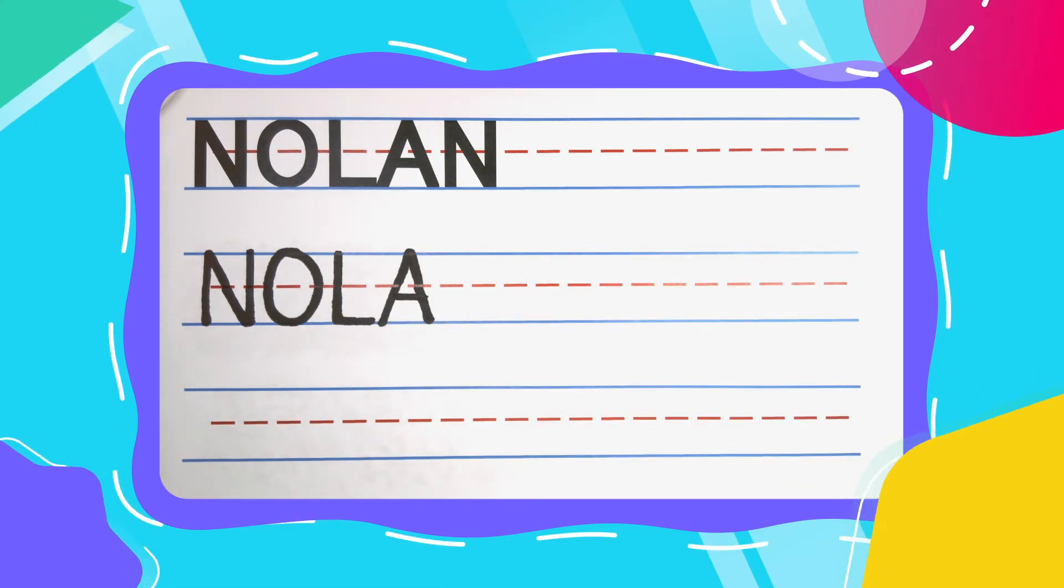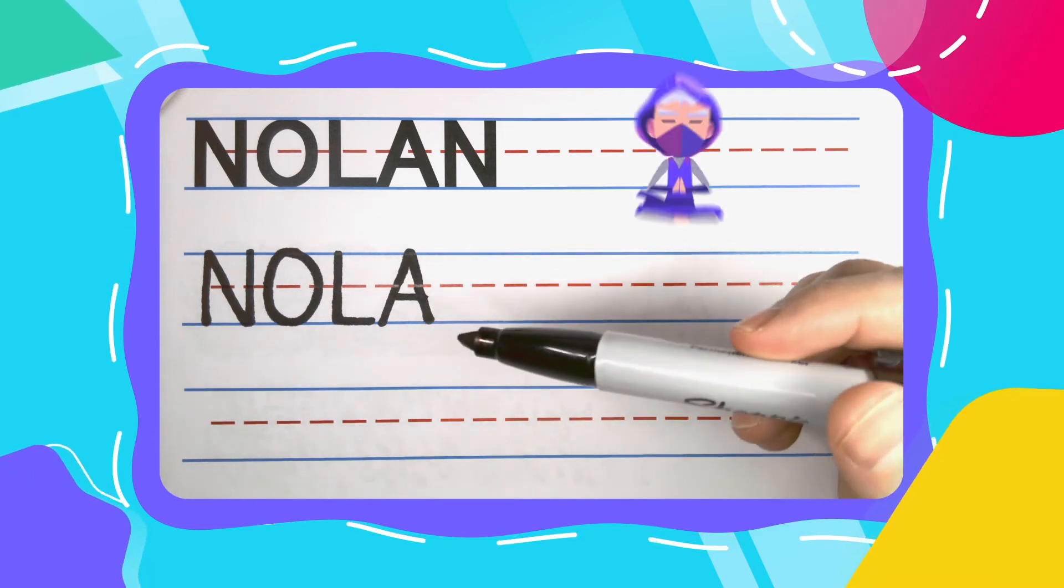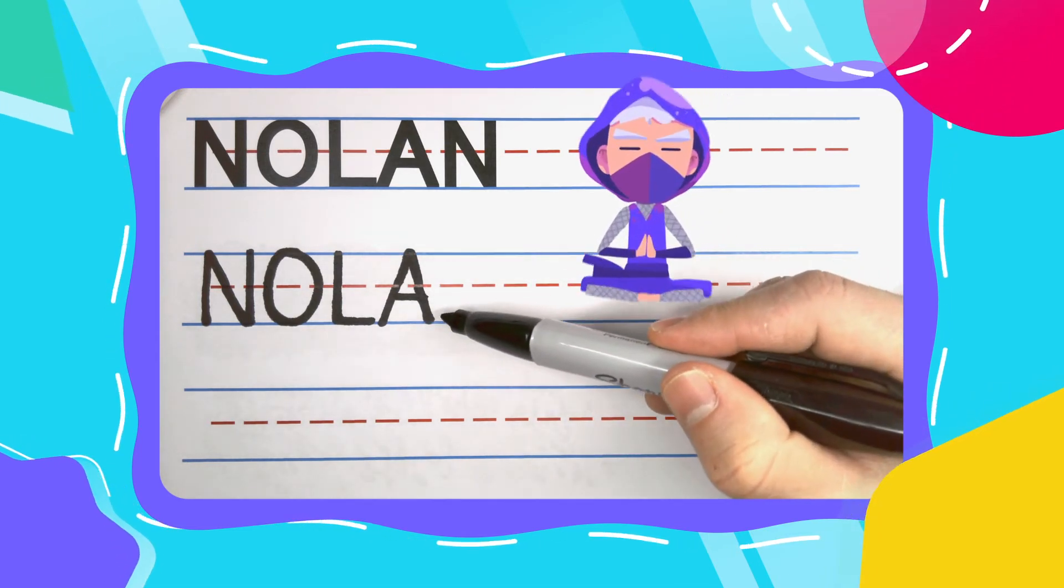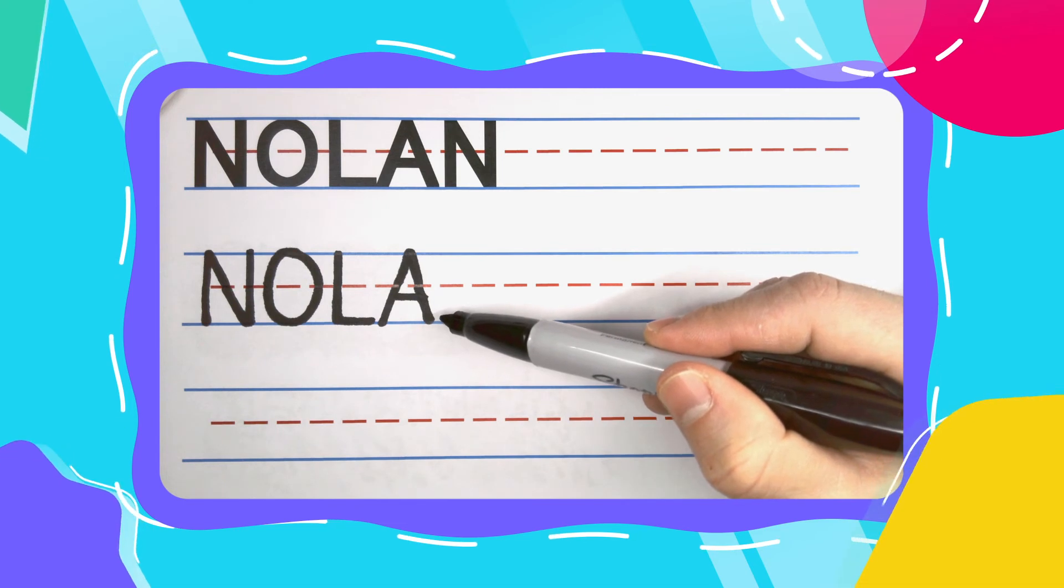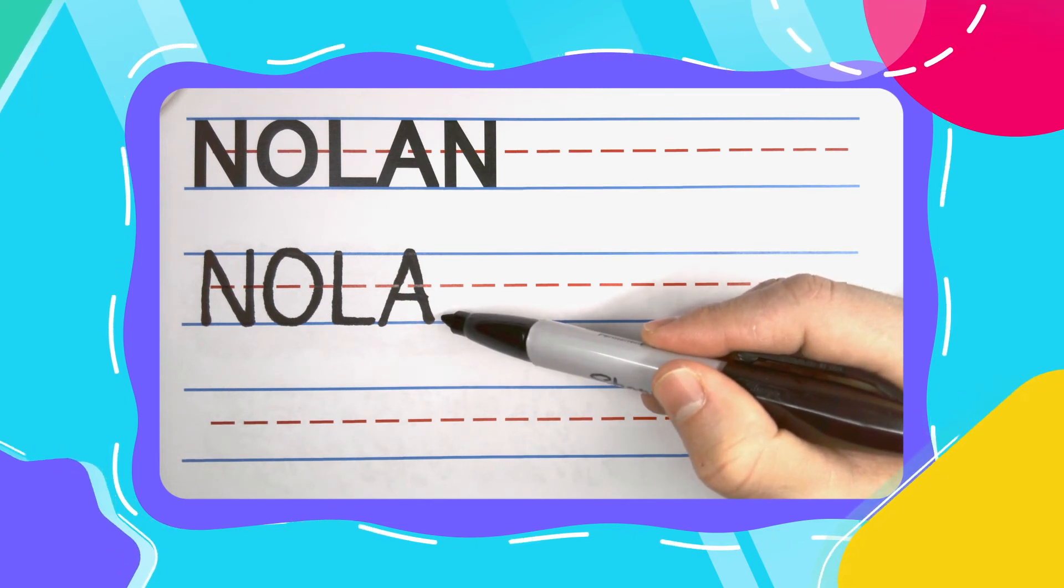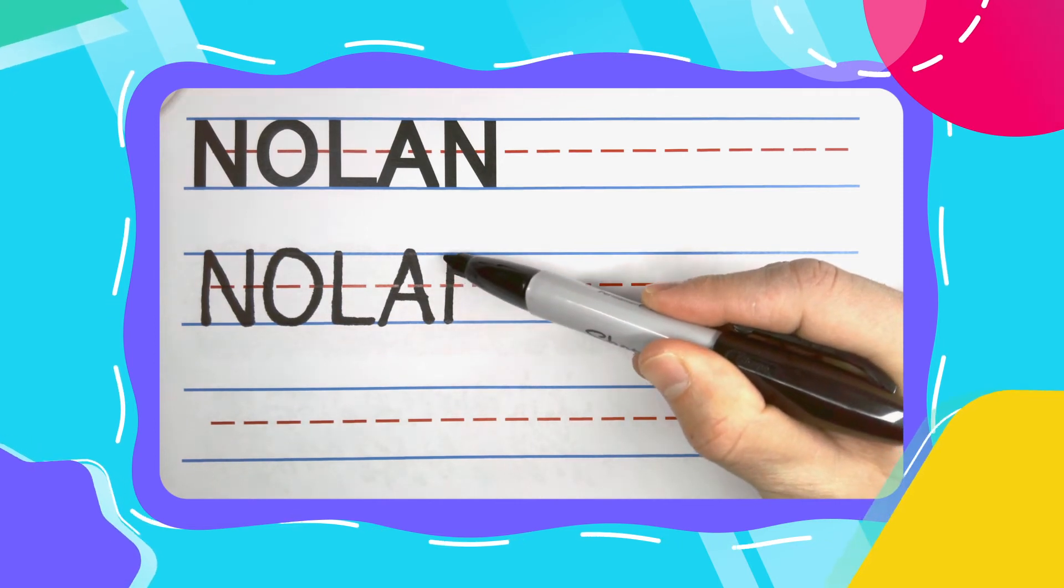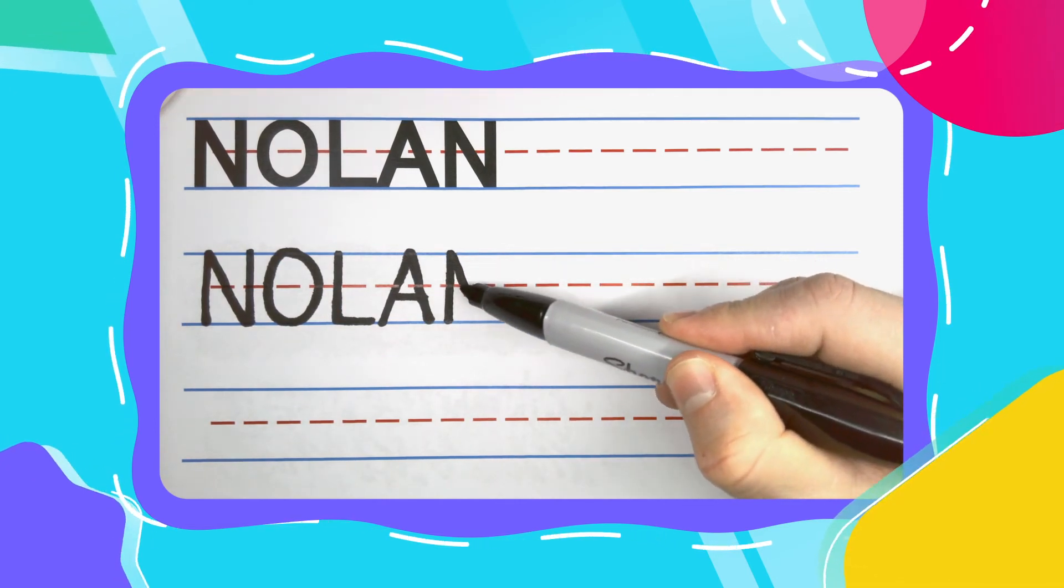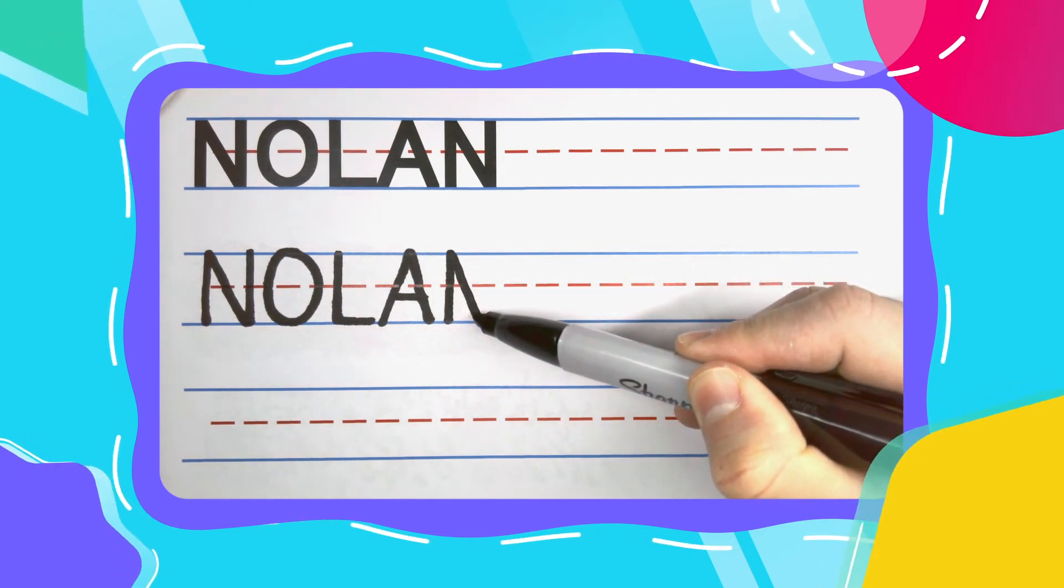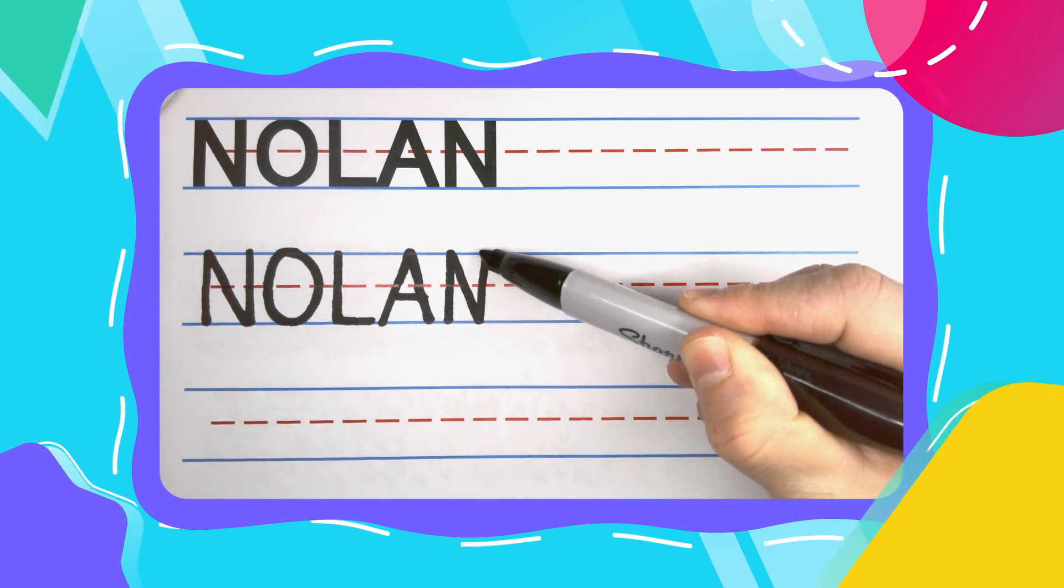The last letter in Nolan is another N. We're going to draw this N a little different from the first one. I call it Wild Style. With Wild Style, you never pick your pen up off the paper. Start at the bottom and come up to the top, then diagonal your way back down to the bottom, then come straight back up for your N.